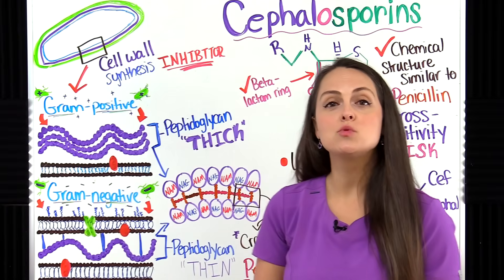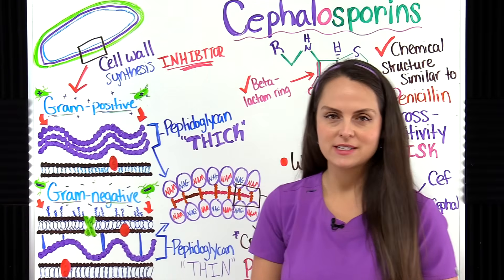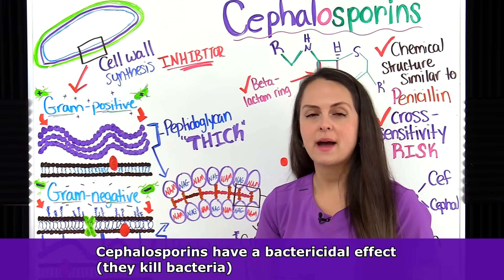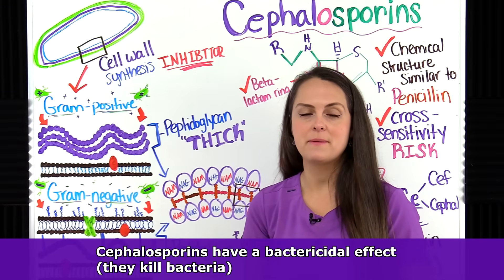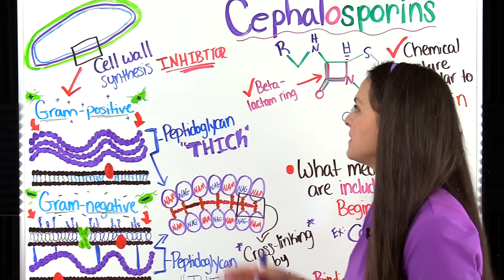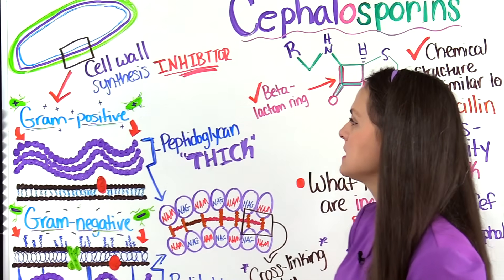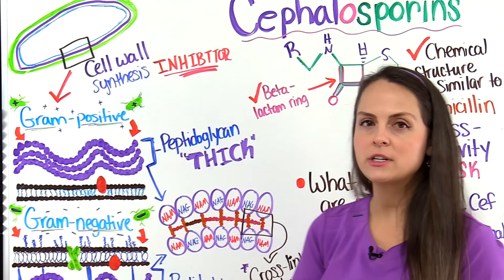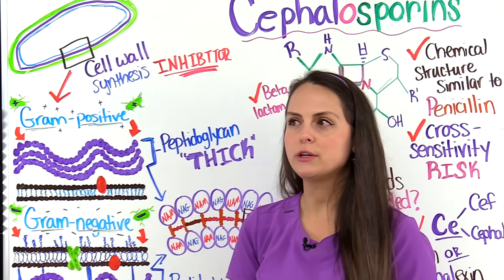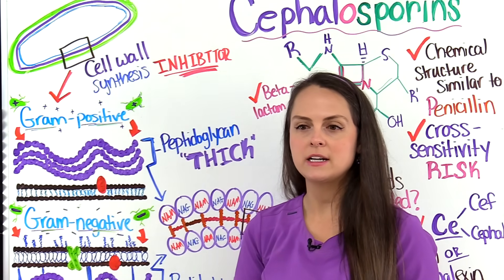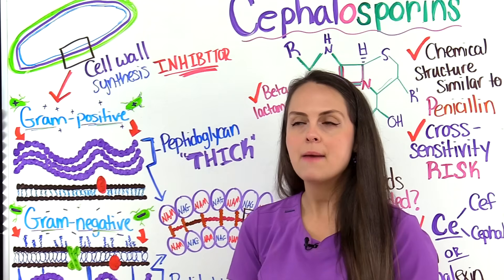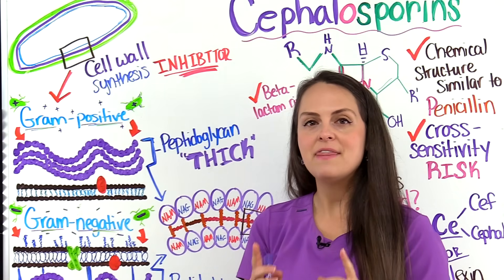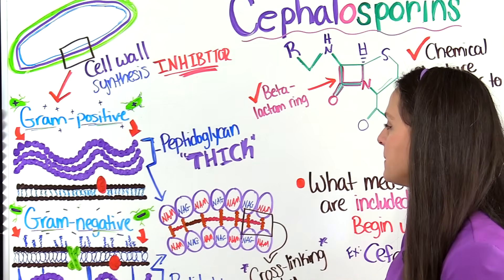Now let's talk about how cephalosporins work to treat bacterial infections. Cephalosporins have a bactericidal effect on bacteria, meaning that they kill them. How they do this is they inhibit cell wall synthesis. Within the cell wall, you have a very important protective layer that is responsible for keeping that bacteria strong and firm and able to withstand certain pressures within the cell. That layer is known as peptidoglycan.